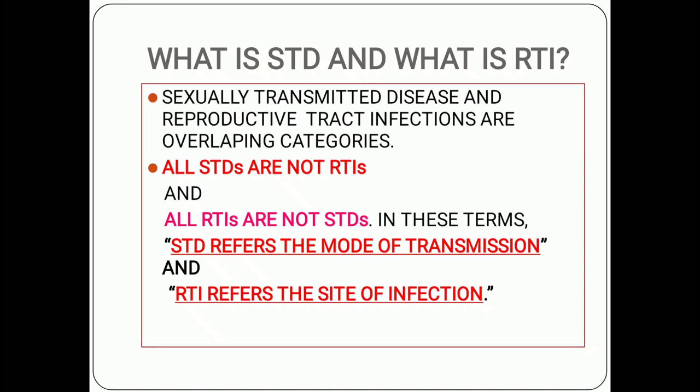What is STD and what is RTI? Sexually transmitted disease and reproductive tract infection are overlapping categories — they are similar but not the same. Not all STDs are RTIs and not all RTIs are STDs. STD refers to the mode of transmission, meaning the way in which the infectious agent enters our body, while RTI refers to the site of infection — any dysfunction regarding the reproductive system. STDs are mainly caused by direct contact and RTIs mainly by indirect contact.